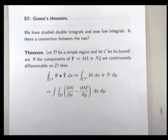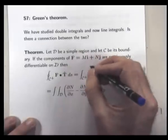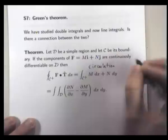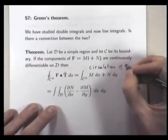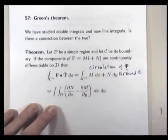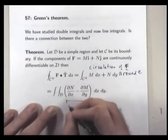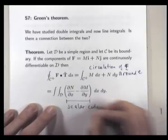So here we have circulation of F around C, and here this is just the scalar curl.